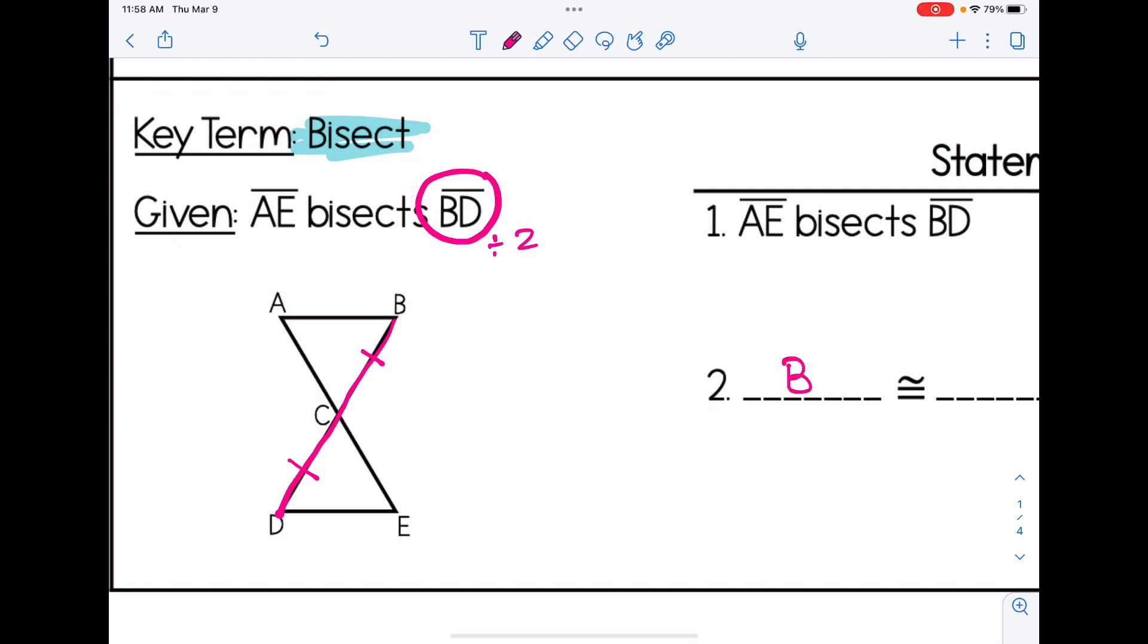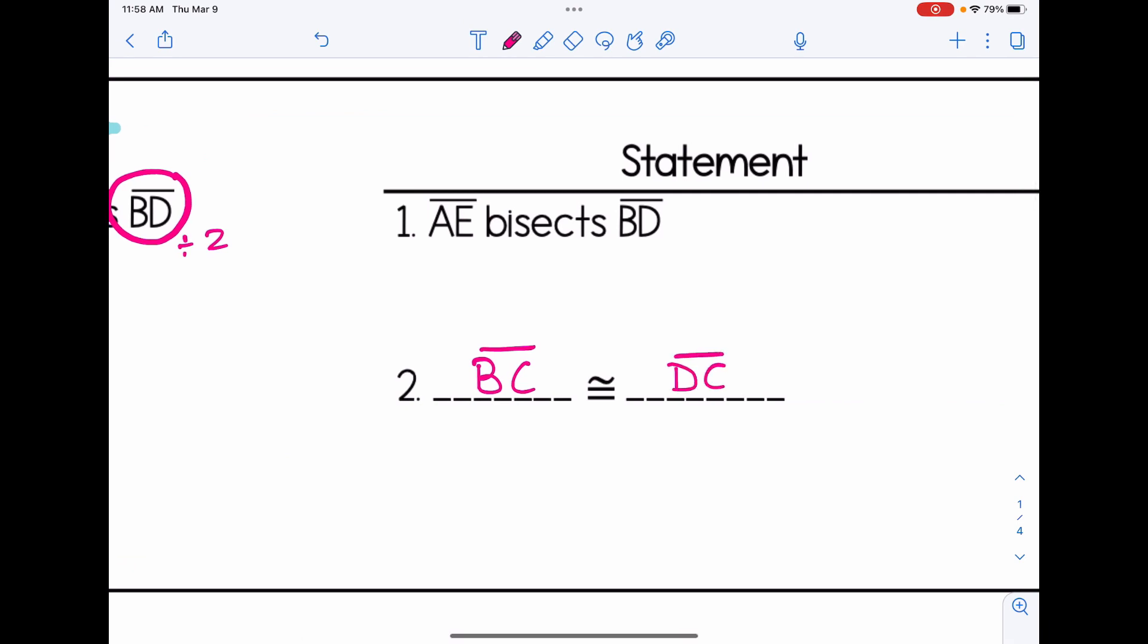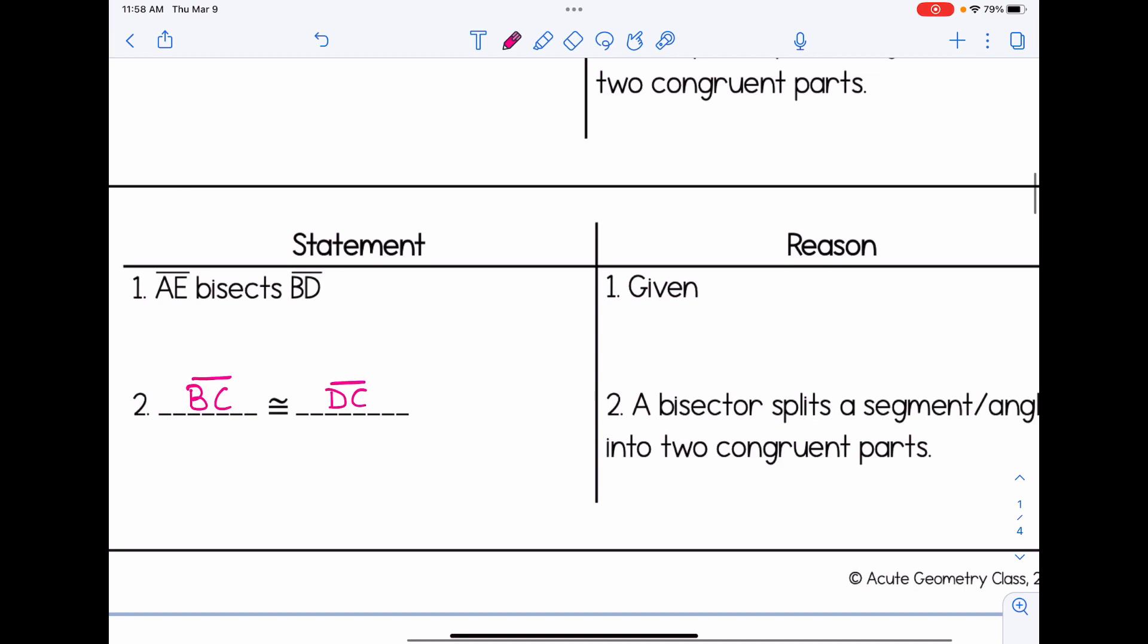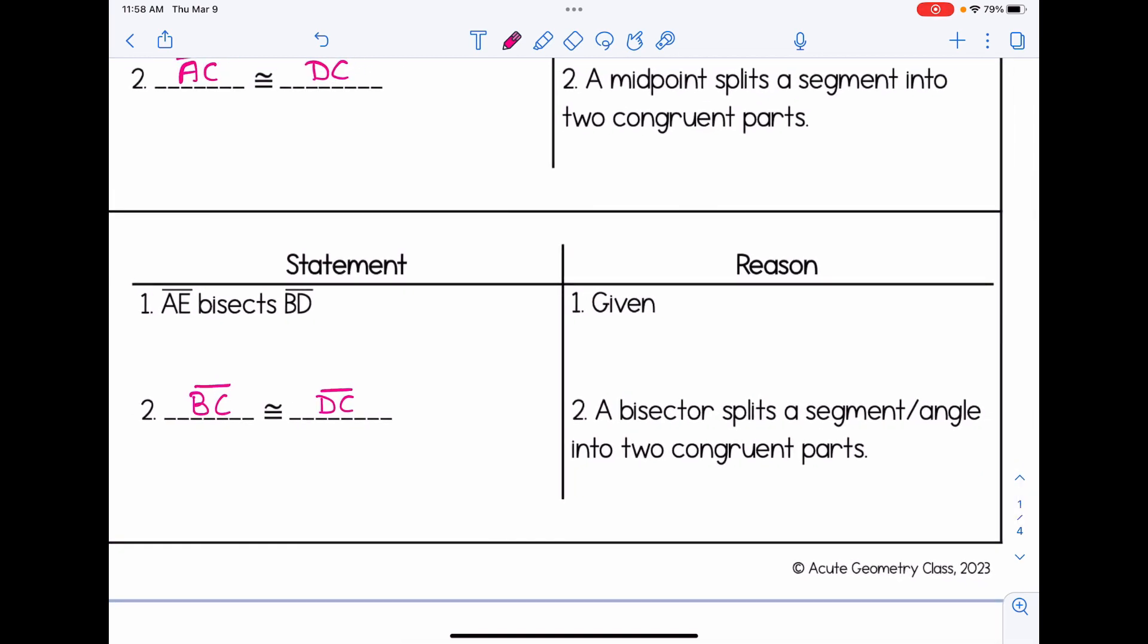I'm looking at the two halves that basically compose BD, so BC and DC. Here's our formalization in the proof format. We have one little thing to just clarify here though. So we know AE bisects BD that was given. And we know BC is congruent to DC because a bisector splits a segment slash angle into two congruent parts. Whenever you see bisector in a proof and you're going to reference this cheat sheet, we're going to pick the word that best fits and it's going to change. In this example, it's going to be a segment bisector because BD, which was what was bisected, is a segment. You're going to see in a couple examples that we're going to have one that's actually an angle bisector instead.